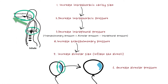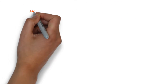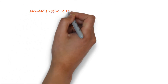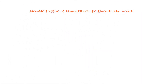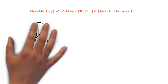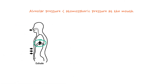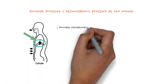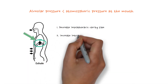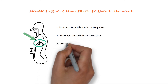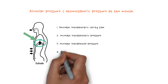Now there is a pressure gradient between the mouth and the alveoli, and air starts flowing from the mouth down to the alveoli. We made the pressure at the alveoli lower than the pressure at the mouth. To breathe out, we simply reverse the whole process — we relax our diaphragm, it moves upward, and the chest wall moves backward and downward.